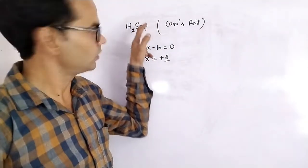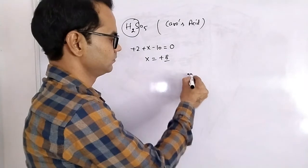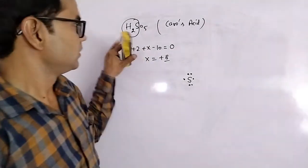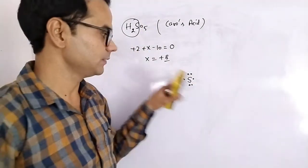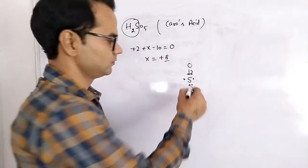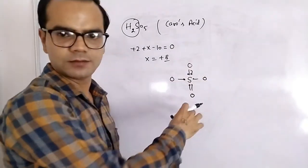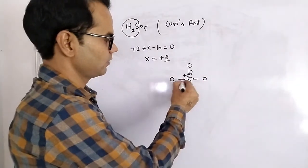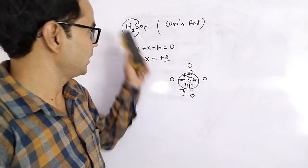In H₂SO₅ there are three types of atoms: hydrogen, sulfur, and oxygen. Oxygen is most electronegative among these three, so it will show a negative charge, while hydrogen and sulfur will show positive charge. Sulfur has six valence electrons. The two hydrogen atoms will share electrons with oxygen because oxygen is more electronegative, so there will be two O–H bonds. By the double bond, the charge on sulfur is plus two; by single bonds, each contributes plus one, giving a total charge of plus six.